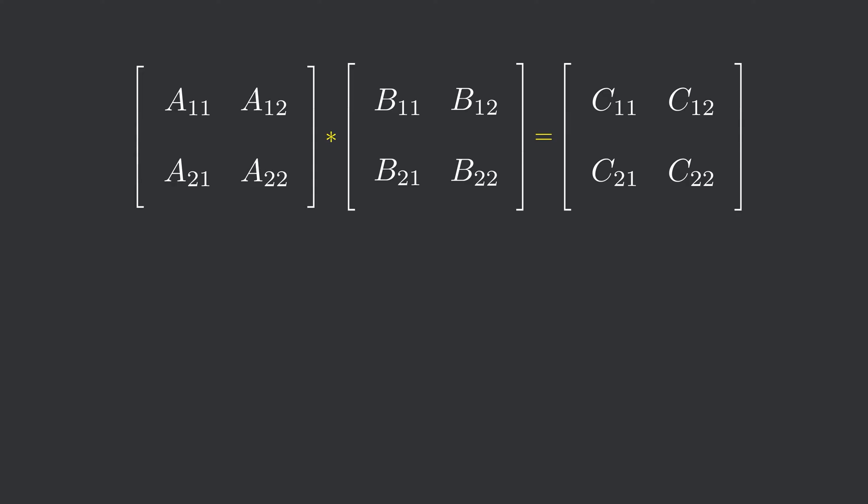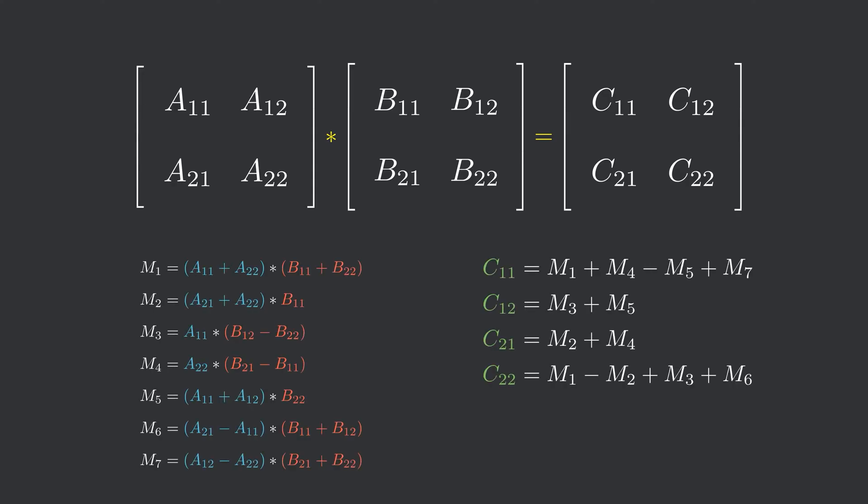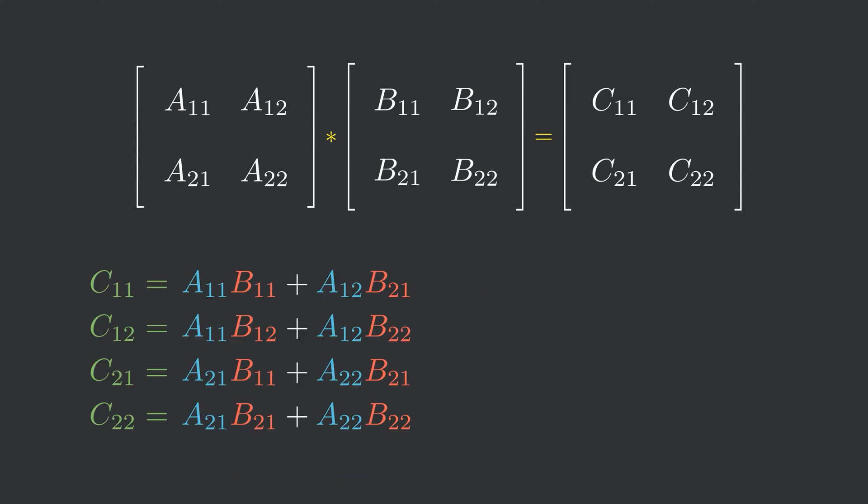The idea behind Strassen's algorithm is to use some clever substitutions to reduce the number of multiplication from 8 to 7 at each step of recursion. The idea is to use these substitutions to get the elements of the resultant matrix. Try pausing the video and solving the values for the resultant matrix. You will get the value as before but at a reduced cost.